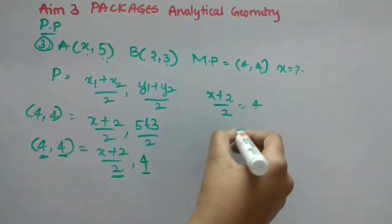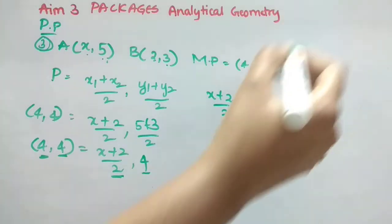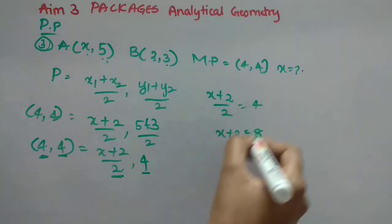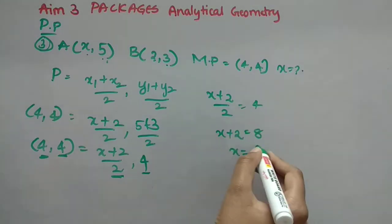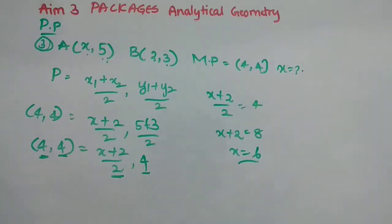Now X plus 2 is equal to, now if I send that 2 to RHS, it is going to be 4 to 8. Then if I send this plus 2 to RHS, it is going to be 8 minus 2, that is 6. So 6 make option C.